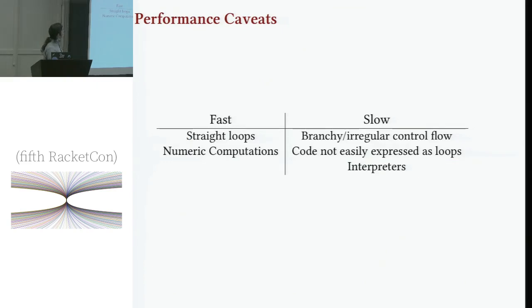So the dot product example made things appear very rosy. We were significantly faster than racket and the story isn't always that good. We have inherited some of the well-known performance edge cases that tracing JIT compilers have, which is anything with very branchy, irregular control flow, code that isn't easily expressed as a loop. Trace compilation is based around compiling loops. If things don't actually look like a loop, we're not going to do particularly well.